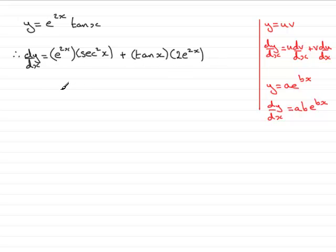Now, all I need to do is tidy this up. So, the first term, I can leave as e to the 2x sec squared x. And for the second term, if I remove the brackets here, I've got to make sure I put this term before the tan x. So, we've got plus 2e to the 2x tan x.